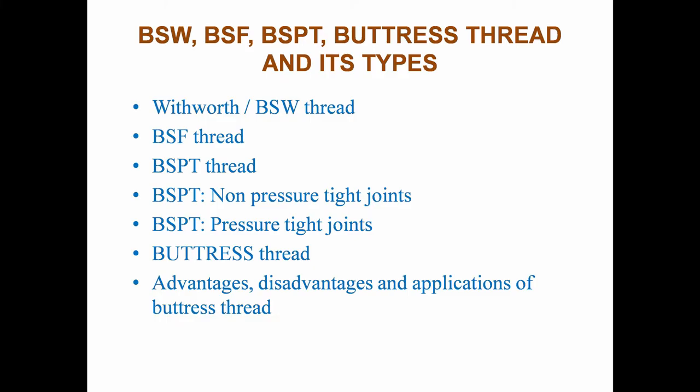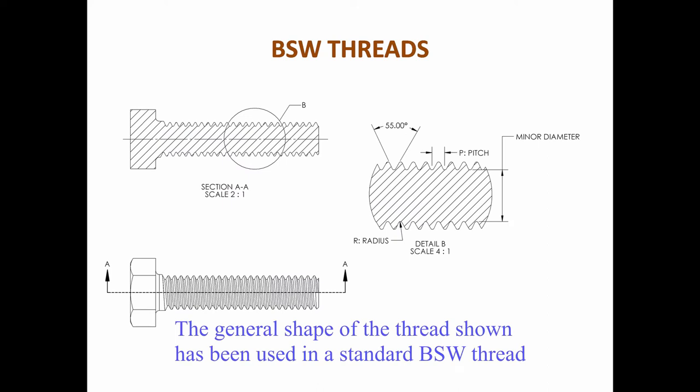Welcome to our channel. In session 13, we cover BSW, BSF, BSPT, and buttress threads and their types used in engineering drawings. This is from engineering graphics, a common paper for all engineering and diploma departments, especially aeronautical, automobile, manufacturing, marine, mechanical, and production. Topics include BSW thread, BSF thread, BSPT thread, BSPT non-pressure tight joints, BSPT pressure tight joints, and buttress thread advantages, disadvantages, and applications.